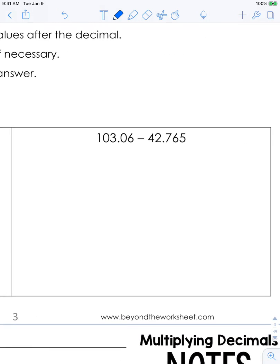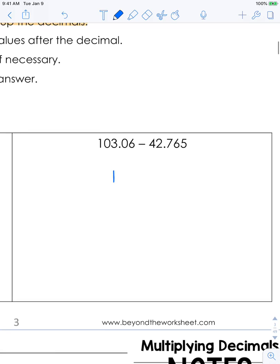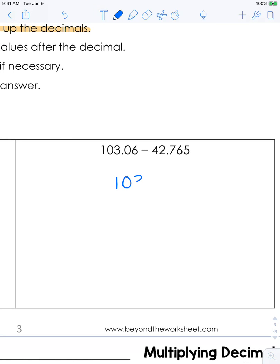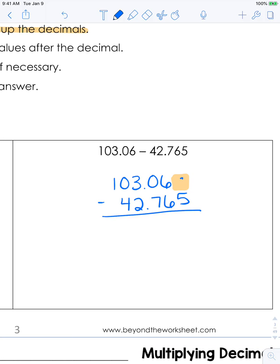Let's look at one more. We have 103.06 minus 42.765. Once again we are missing a digit so we will add zeros and then we will start our subtraction.